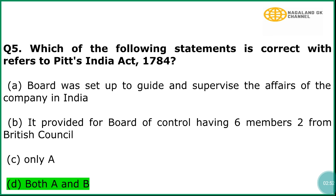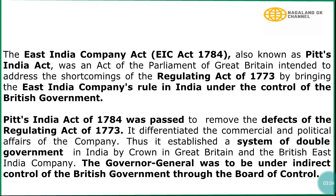That is, a Board was set up to guide and supervise the affairs of the company in India, and it provided for a Board of Control having 6 members drawn from British Council. In explanation, the East India Company Act 1784, also known as Pitt's India Act, was an act of the Parliament of Great Britain intended to address the shortcomings of the Regulating Act of 1773 by bringing the East India Company's rule in India under the control of the British Government. It differentiated the commercial and political affairs of the company, establishing a system of double government in India. The Governor General was to be under the control of the British Government through the Board of Control.